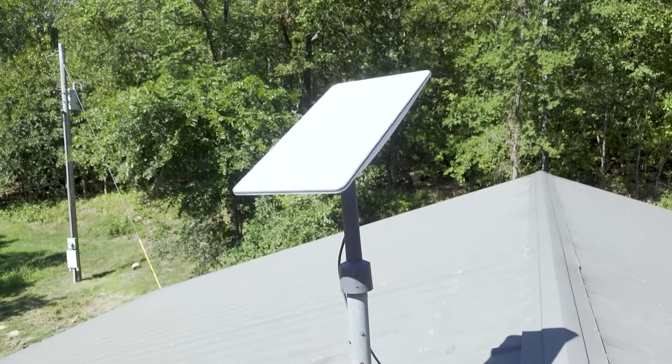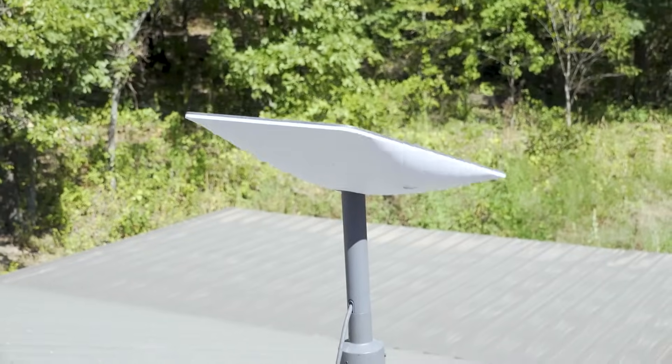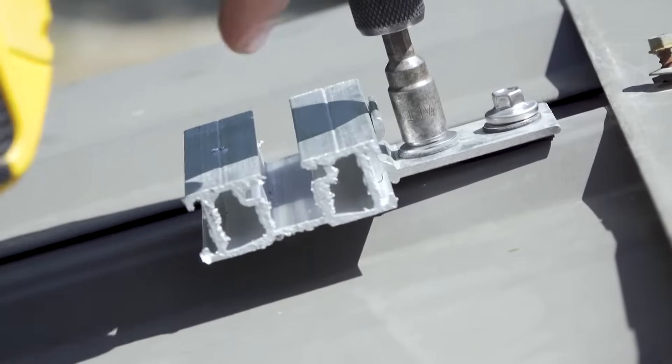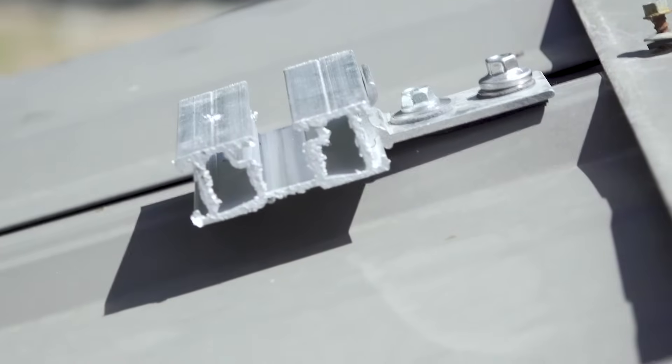Now that everything is connected, the Starlink dish can begin its calibration process. While that's happening, we decided to do a little wire management with the remaining GripperFix struts we had on hand.